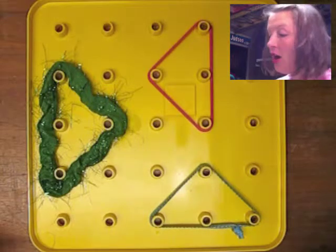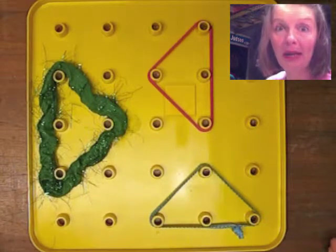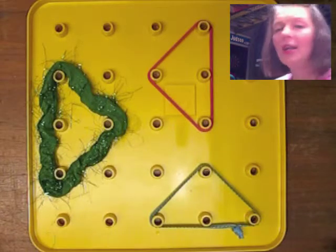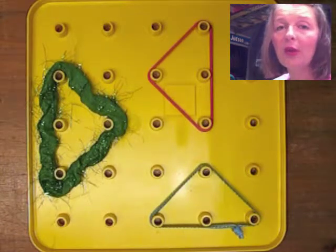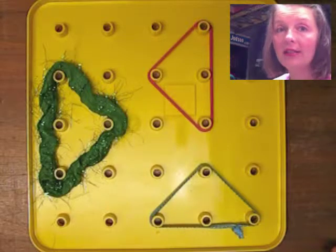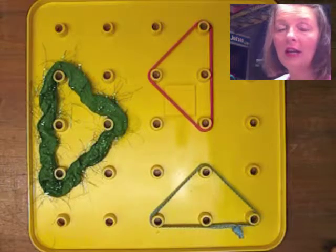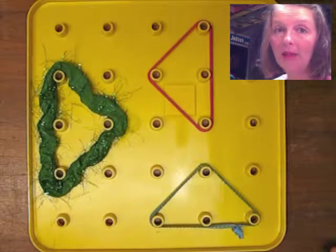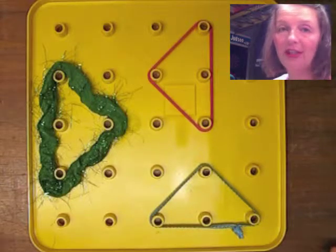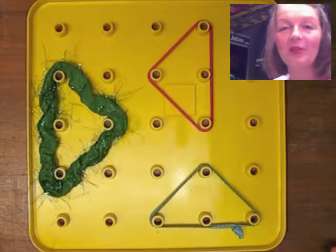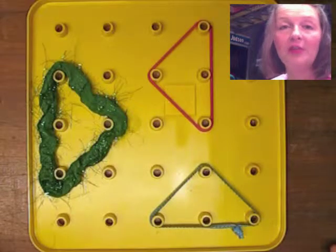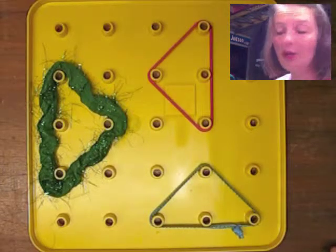So here we have on the Discovery Toys Giant pegboard three congruent triangles. Now congruent means that they're exactly the same size and exactly the same shape. It's not the math definition technically but that's what it means for two figures to be congruent. Same size, same shape.